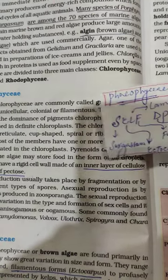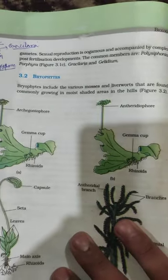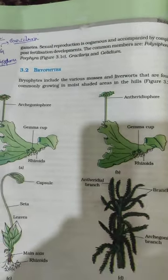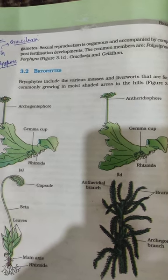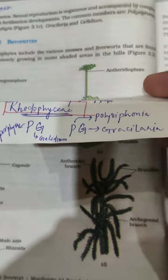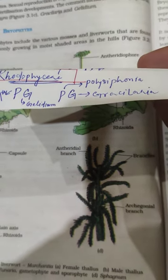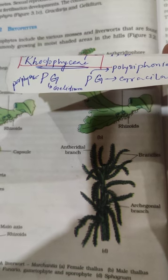Next are the examples of Rhodophyceae. The examples of Rhodophyceae are Polysiphonia, Porphyra, Gracilaria and Gelidium. These examples can be remembered by the trick 'PG PG': P relates to Porphyra, G to Gelidium, P to Polysiphonia, and G to Gracilaria.